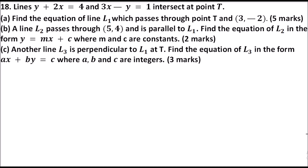The first thing we do is: if these two lines intersect at T, then the values of x and y at T are the same for both lines. We rewrite the first equation as y equals negative 2x plus 4. For the other one, we take y to the other side and get y equals 3x minus 1.